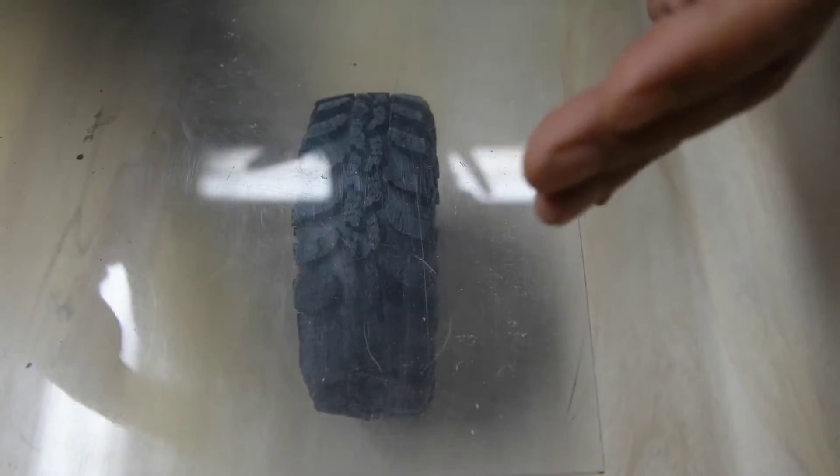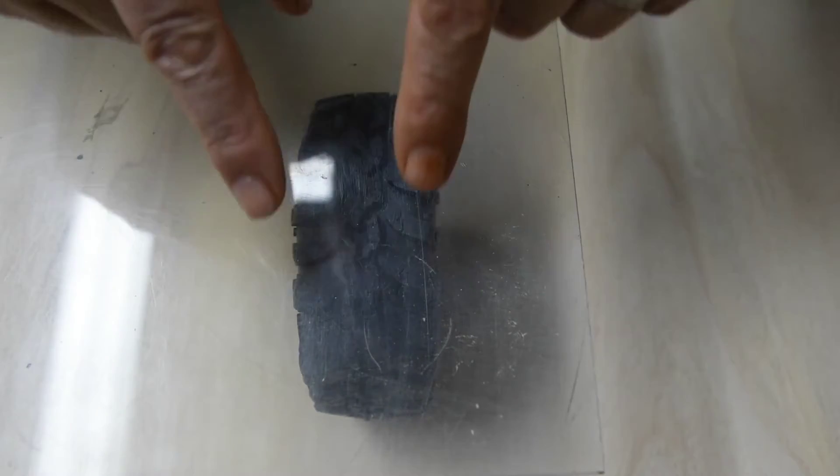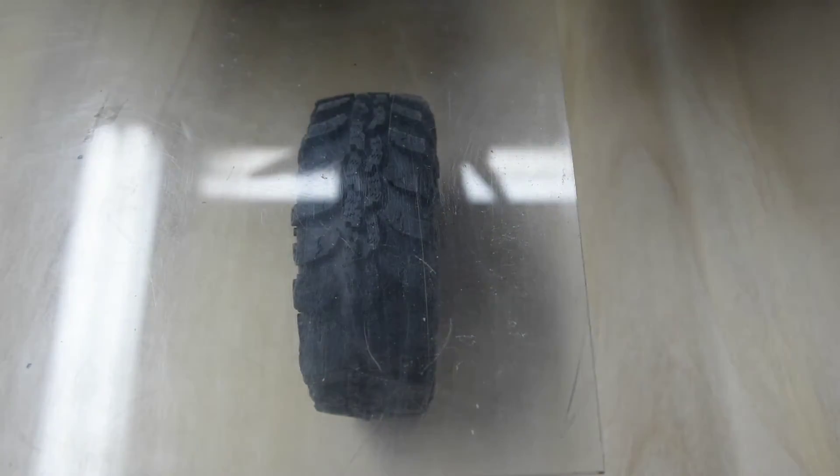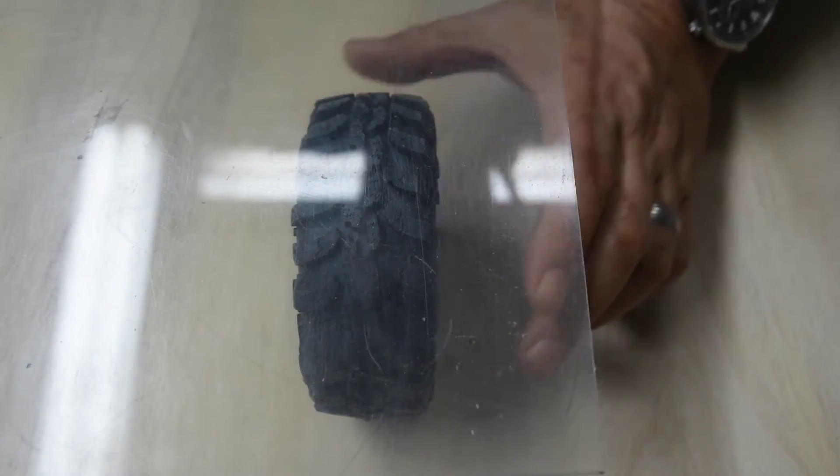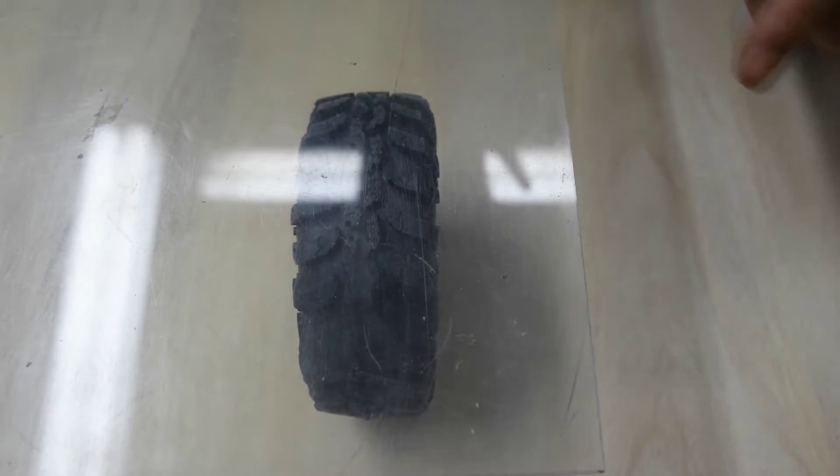Notice what happens to the center. The center squeezes in while the outer edges remain rigid and the tread deforms as a result of that. So that gives you an idea why the center of the foam wears more.